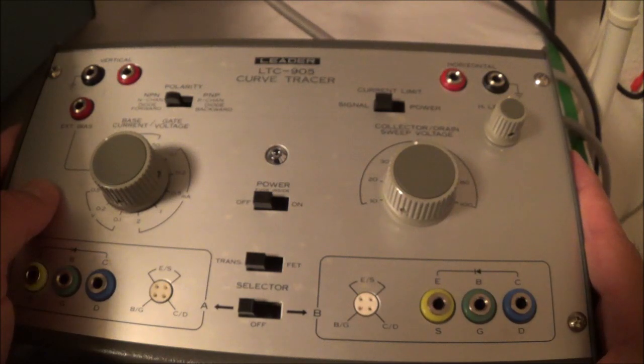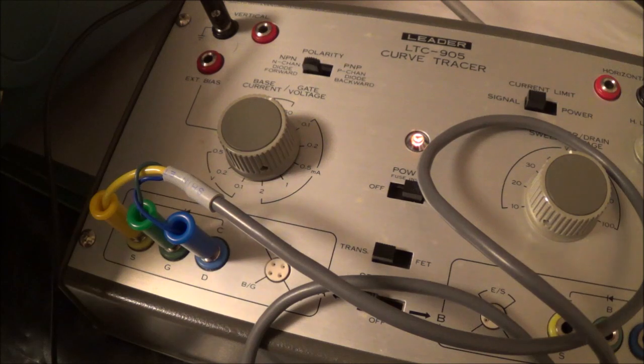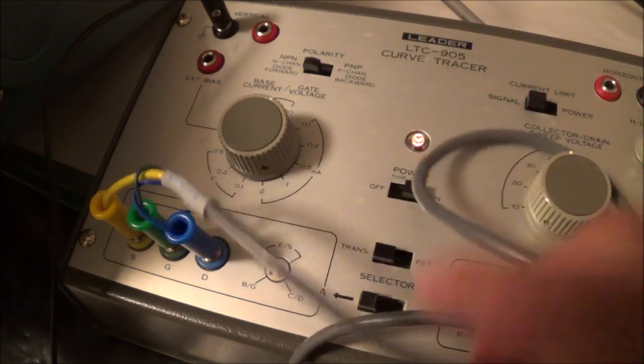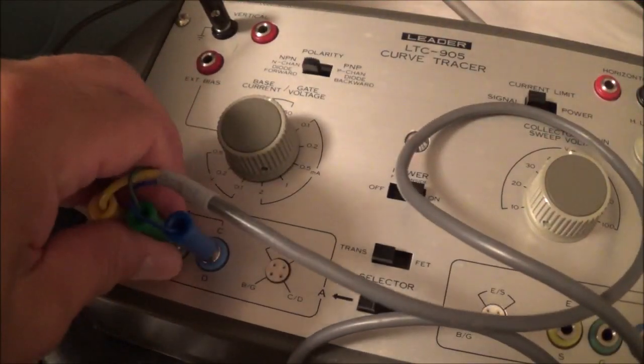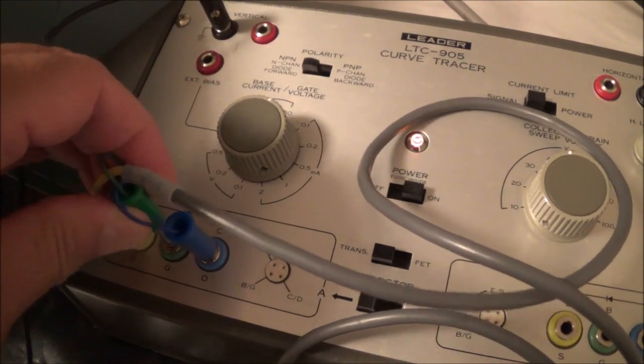So let me go ahead and hook up a scope and see what is actually coming out. Now I just said a minute ago that the curve tracer basically applies a staircase waveform to the transistor. I just want to see if this is actually the case. If we look here underneath, it actually says base.